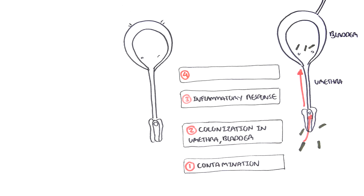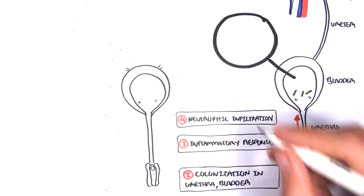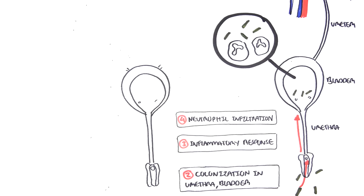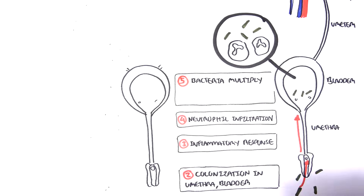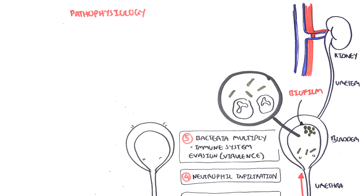Neutrophils are then recruited to this area. As you can see, in the bladder you have bacteria and neutrophils. The bacteria multiply and are able to evade the immune system because of certain virulence factors. E. coli, for example, can bind to cells in the lower urinary tract and hide from immune cells. The bacteria can also form biofilms — a biofilm is any group of microorganisms that stick to each other and adhere to surfaces, allowing them to survive.